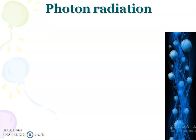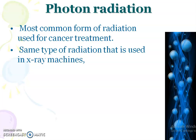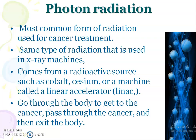The first one is photon radiation. This is the most common form of radiation used in radiation therapy to treat cancer — the same type used in X-ray machines. Photon radiation comes from a radioactive source such as cobalt or cesium, or from a machine called a linac or linear accelerator. It penetrates into the body, reaches the cancer, passes through it, and then exits the body.